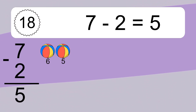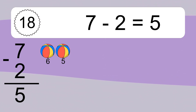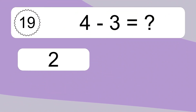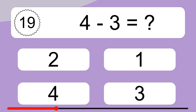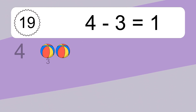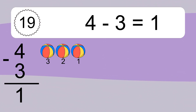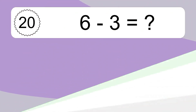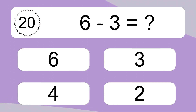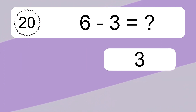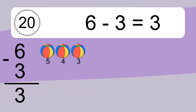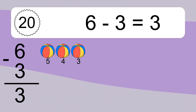7 minus 2 equals what? 7 minus 2 equals 5. Let's count it: 6, 5. 4 minus 3 equals what? 4 minus 3 equals 1. Let's count it: 3, 2, 1. 6 minus 3 equals what? 6 minus 3 equals 3. Let's count it: 5, 4, 3.